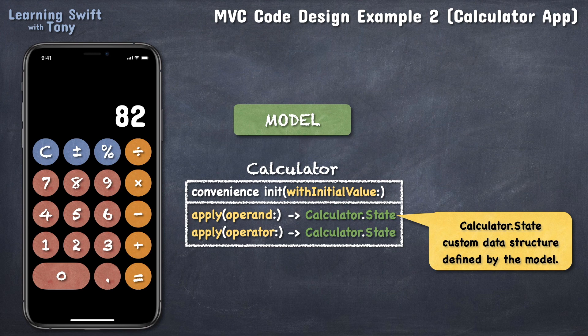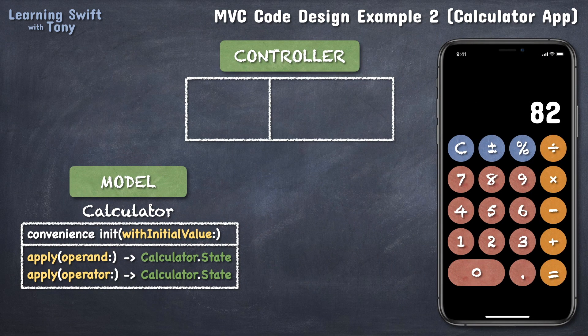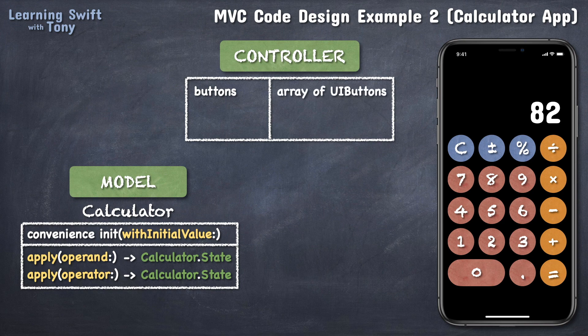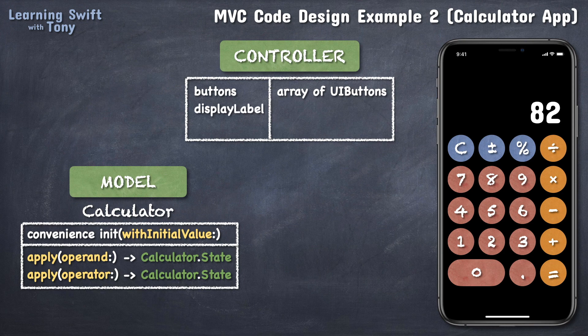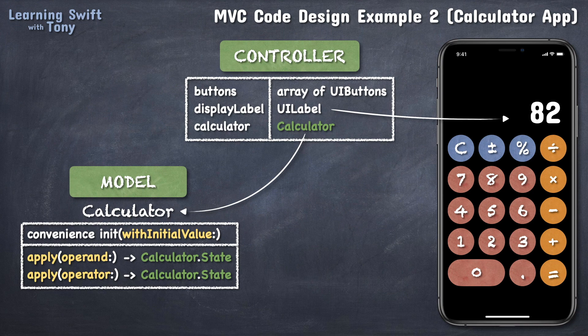With the model designed, we need to start thinking about what the controller would need to have. Somewhat similar to our last example, the controller will definitely need a bunch of buttons on the screen, which we will represent by an array of generic user interface buttons. Then we will need to display the current calculator value using a simple label. And finally, the controller will need to create and own a calculator model object, which is what we have previously designed. Plenty of similarities with our previous example in the last video.